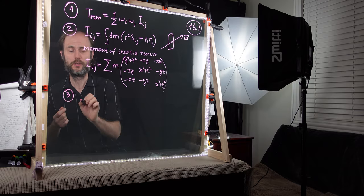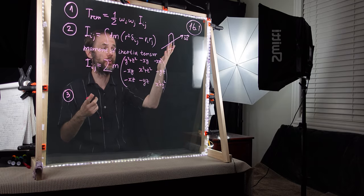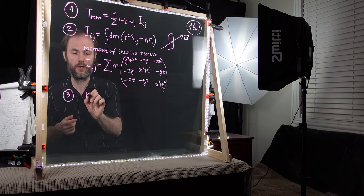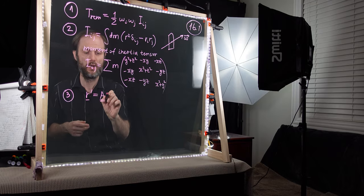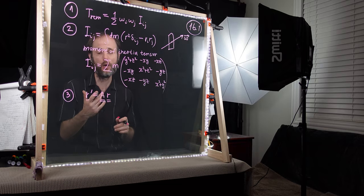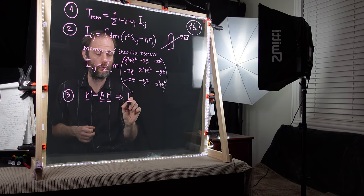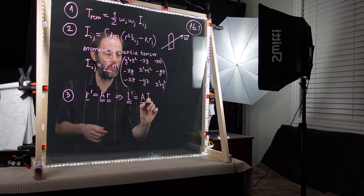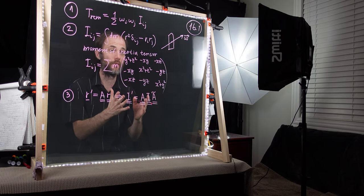One key thing we discussed is how the moment of inertia tensor depends on the axis choice of our coordinate system. We can pick any Cartesian coordinates x, y, and z and rotate them relative to any other system. If we have new coordinates r prime given by a rotational matrix A that multiplies the old coordinates r, then our moment of inertia tensor transforms as I prime equals A times I times A-transpose.